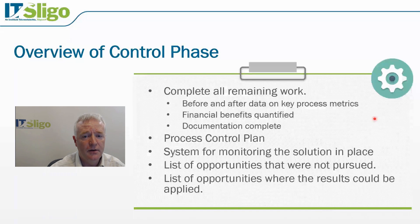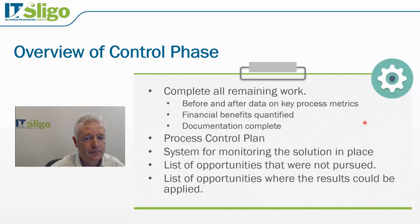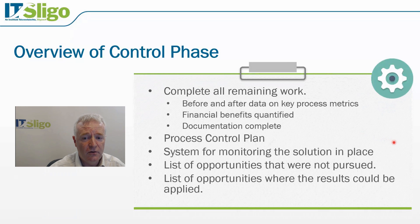In this phase all remaining work on the Six Sigma project will be completed. Before and after data on the key process metrics will be compiled. The financial benefits of the Six Sigma project will be quantified and a documentation package will be completed and presented to the process owners when the project is transitioned. A system for monitoring the solution will be put in place, often by means of control charts, also known as statistical process control. A list of opportunities where the results could be applied in other areas will also be identified.